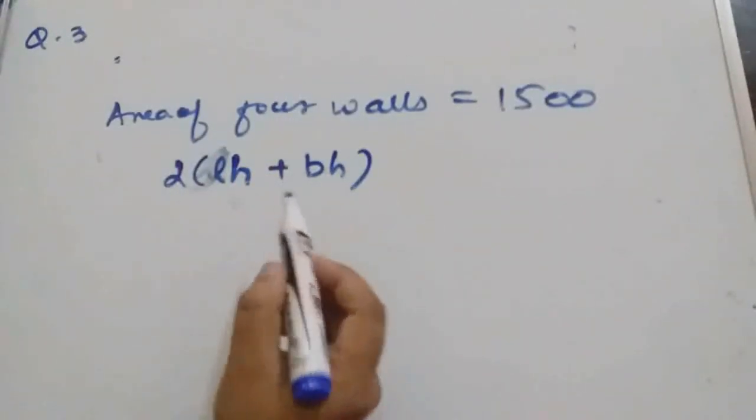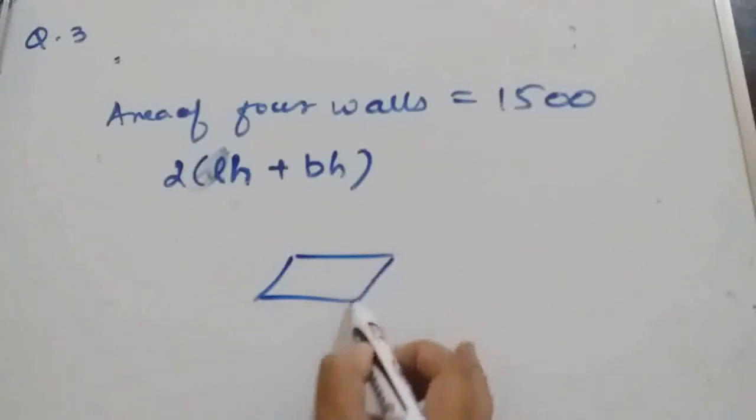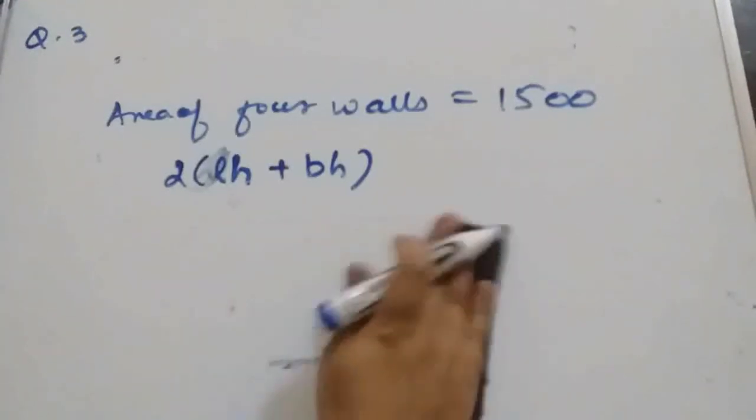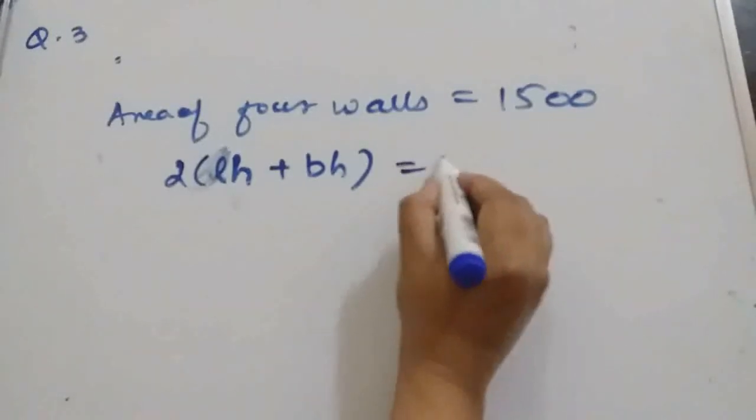L B, see. This L B part won't be there, flooring and ceiling. Only 4 walls. So this is H, this is B. So B H and L H will come. So is equal to 1,500.